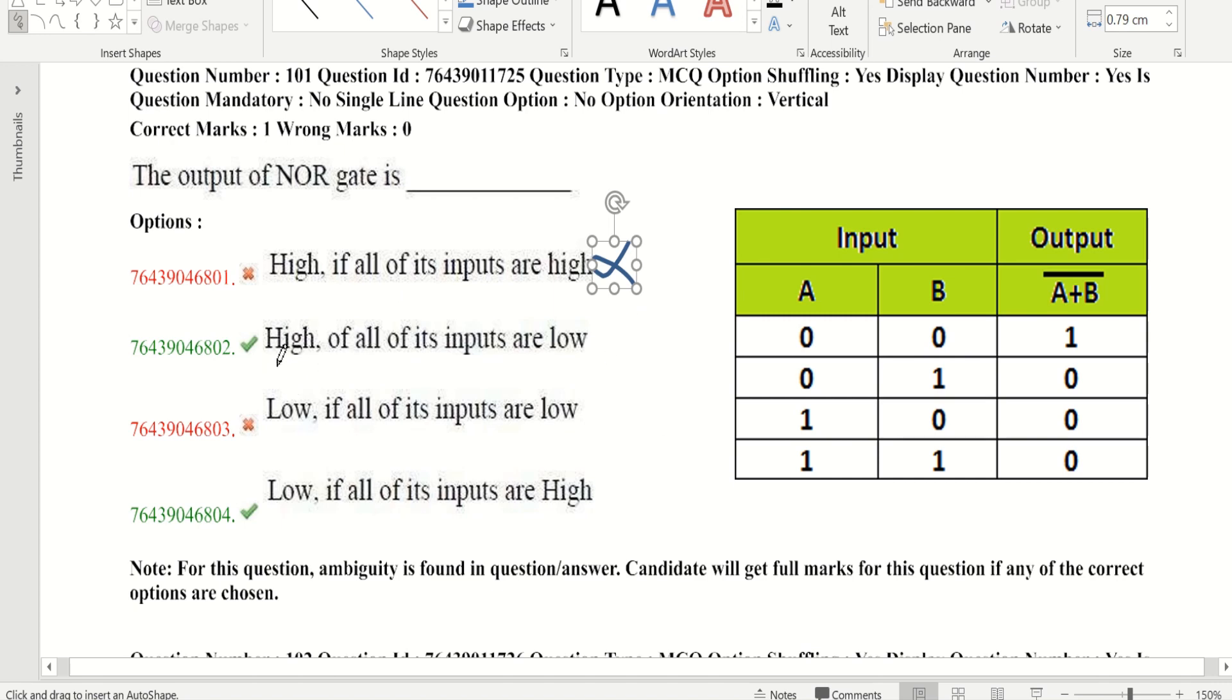Now let's check, high if all of its inputs are low. It says that when all inputs are low, the output is high. Here inputs are low and the output is high. So it's a correct option.